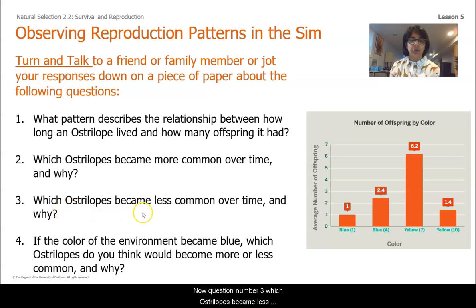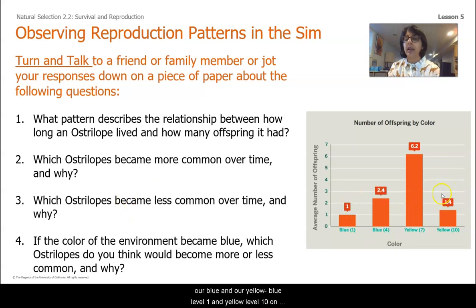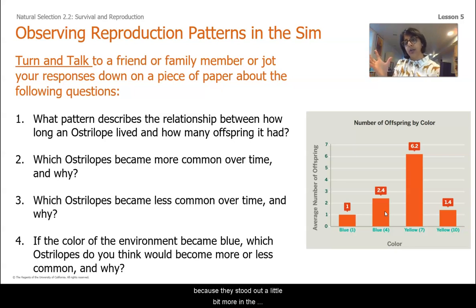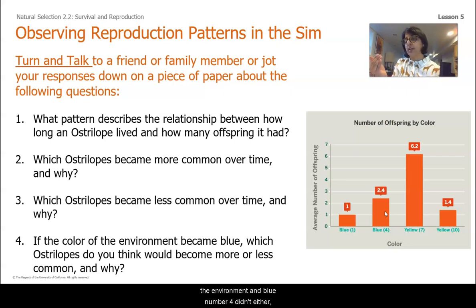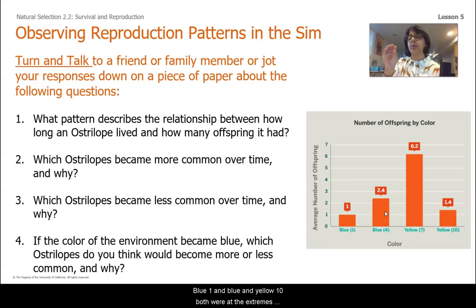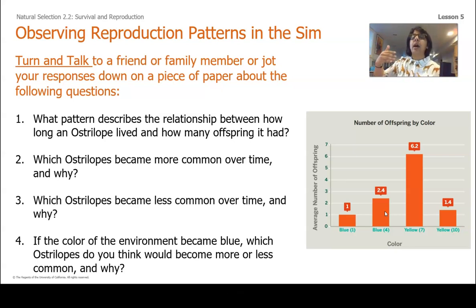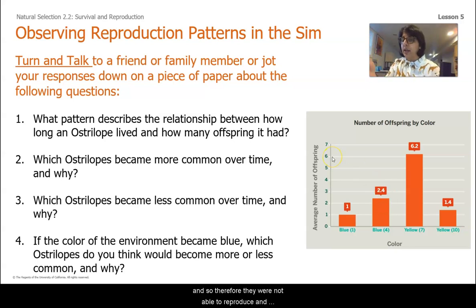Question three: which Ostrilopes became less common over time and why? What I noticed is that blue level one and yellow level ten — those two extremes — became less common over time because they stood out in the environment. Neither of those matched the environment, and blue number four didn't either, but to a lesser extent. Blue one and yellow ten were at the extremes where they popped out of the environment. Because they were not able to blend in, they were more likely to be eaten by the carnathons and therefore could not reproduce, so they became less common over time.